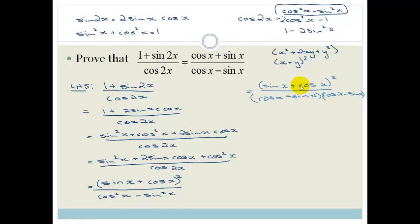And what happens? Do you see that this bracket, sin x plus cos x and this bracket, cos x plus sin x are actually the same thing. So I can cancel this with one of them. So that goes like that.